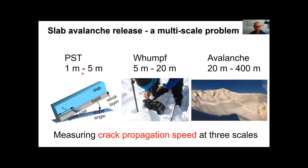In contrast, preceding an avalanche, the crack propagates in the weak layer for hundreds of meters. So the question is whether the crack propagation speeds measured in PSTs are representative for large-scale crack propagation occurring before an avalanche releases.